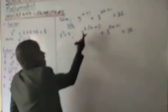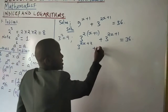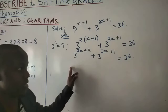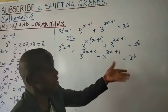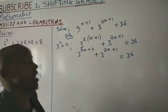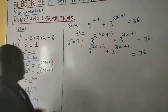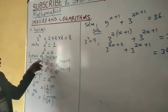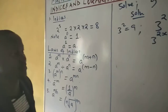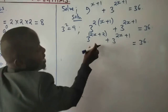Opening brackets: 3^(2x+2) + 3^(2x+1) = 36. Note that 36 cannot be expressed as a power of 3 — since 3²=9, 3³=27, 3⁴=81 — so we leave it as 36. By the first law in reverse, 3^(2x+2) = 3^(2x) × 3², and 3^(2x+1) = 3^(2x) × 3¹.